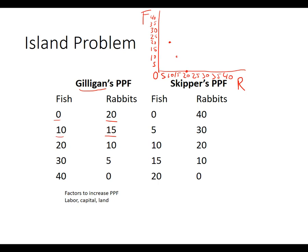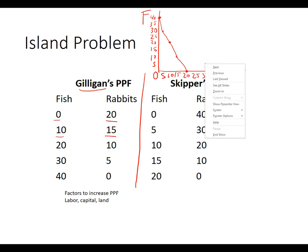Then Gilligan can catch thirty fish and five rabbits, all the way up here. Finally, he can focus entirely on fish. We connect the dots — that's Gilligan's production possibility frontier. Now for the Skipper: he can catch zero fish and forty rabbits, so that point is way out at forty rabbits. Then five fish and thirty rabbits.